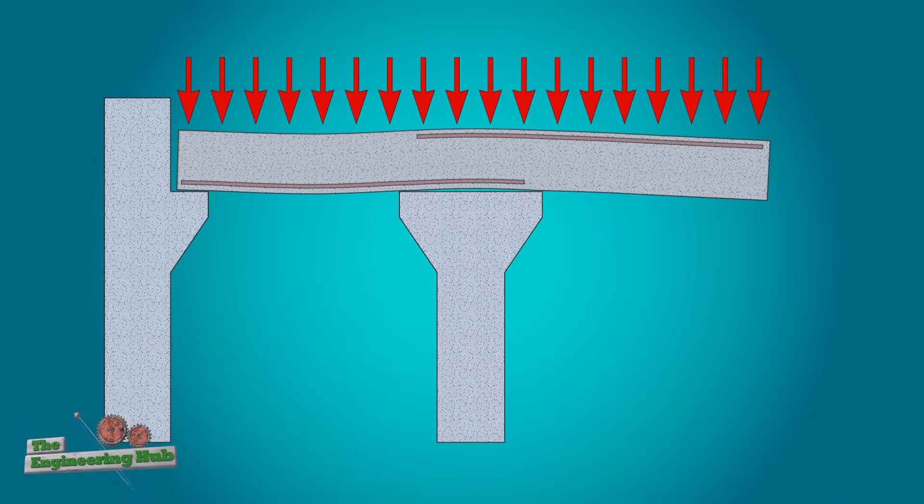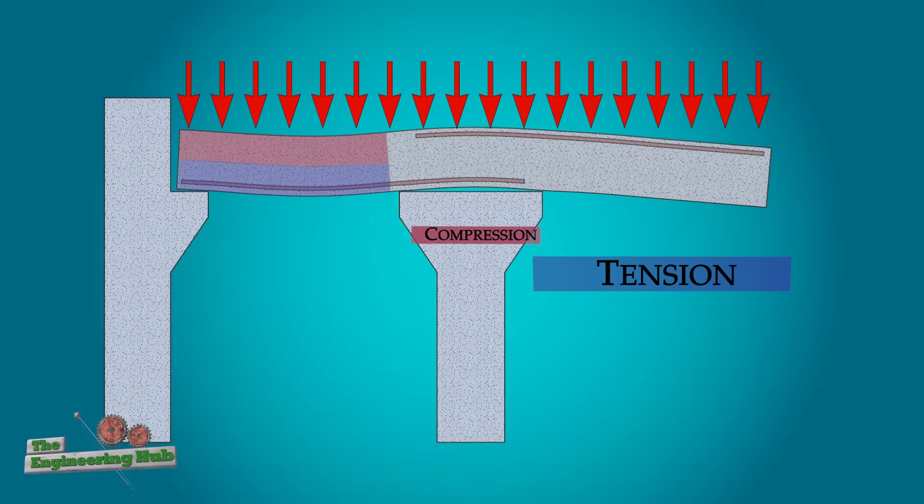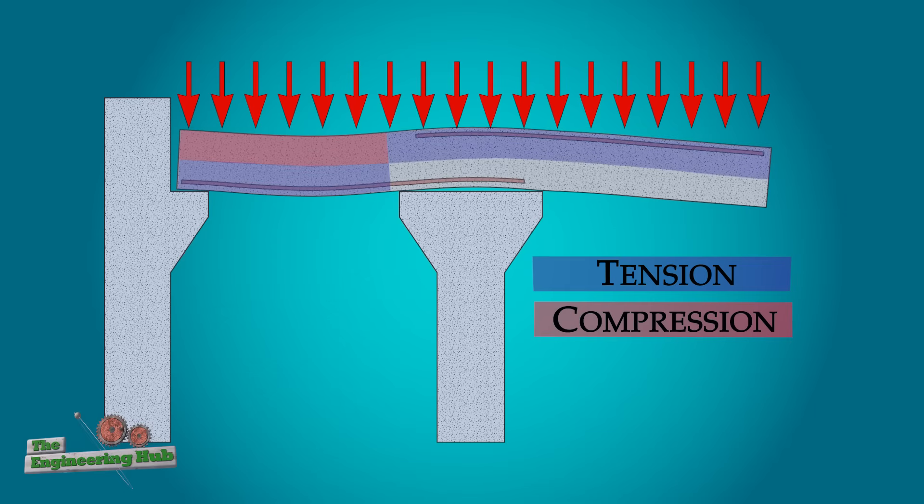It's also worth keeping in mind that the tension zone is not necessarily always on the bottom. For example, near a column or at a cantilever, the tension would be in the top and compression in the bottom.